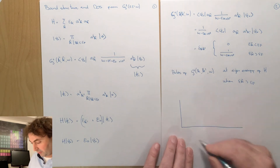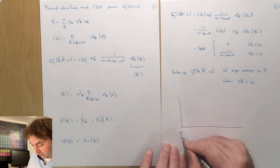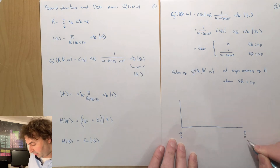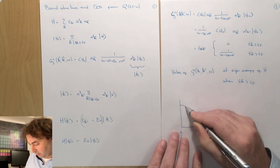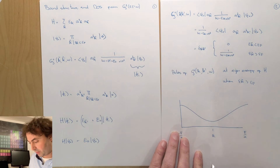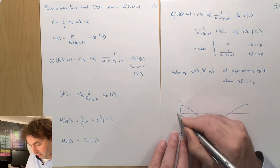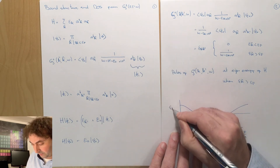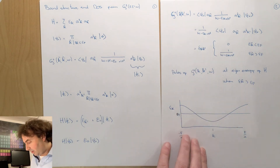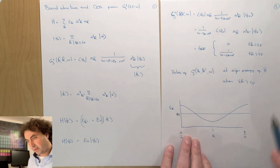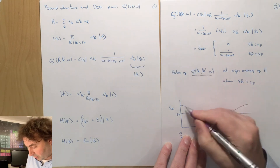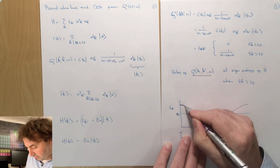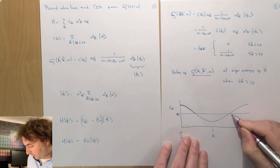If we look at our band structure — here just for a one-dimensional model — we have a cosine-like dispersion, we have a Fermi energy in there, and what we trace are the poles of the Green's function.